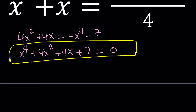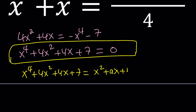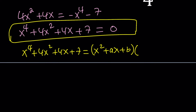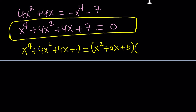Since we don't have x cubed, we can go ahead and do the following. x to the fourth plus 4x squared plus 4x plus 7 — let's go ahead and set it equal to x squared plus ax plus b. This is one of the methods. You could also use perfect squares, like turn this into a difference of two squares — put the 4x plus 7 on the right-hand side and then add something to both sides to make it a perfect square.